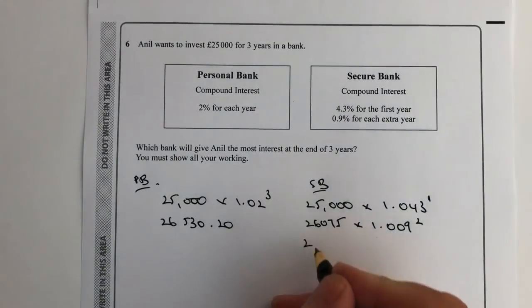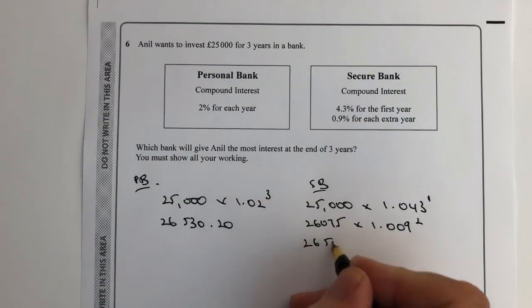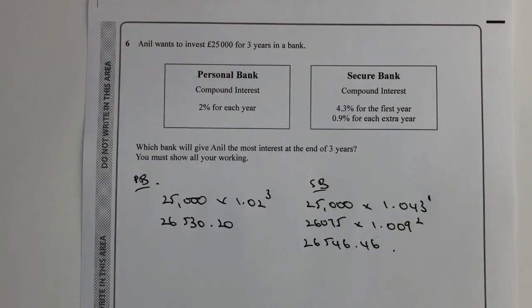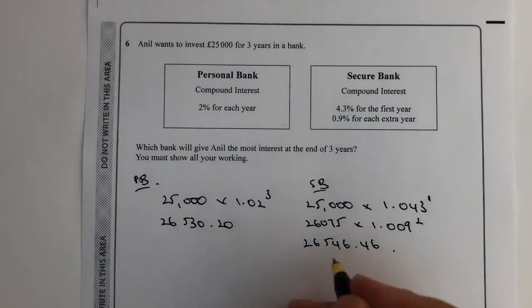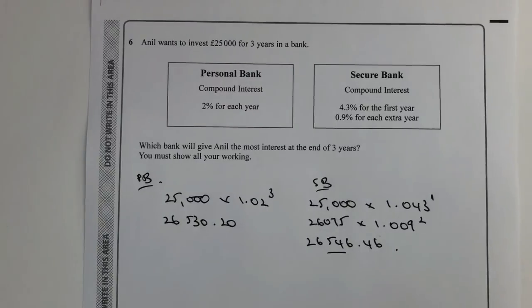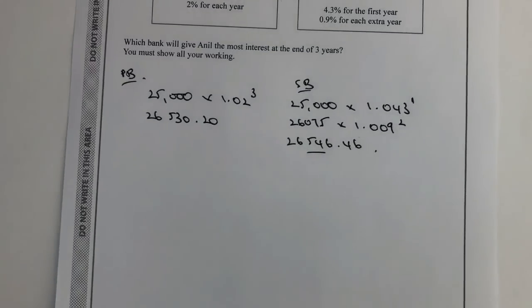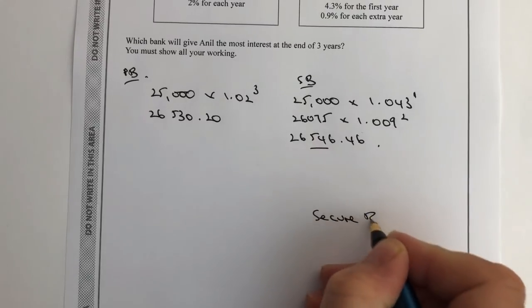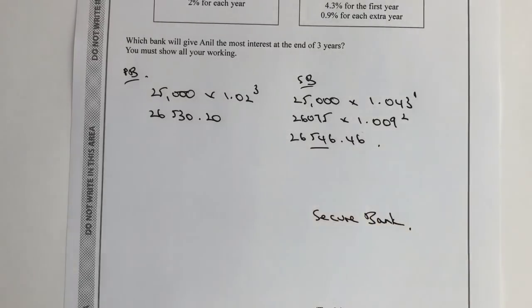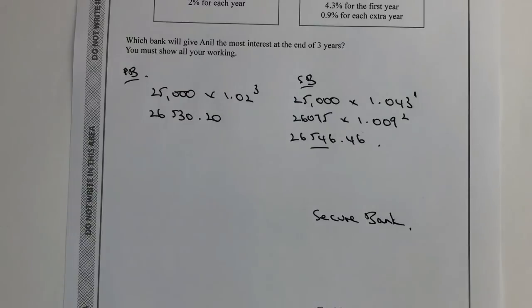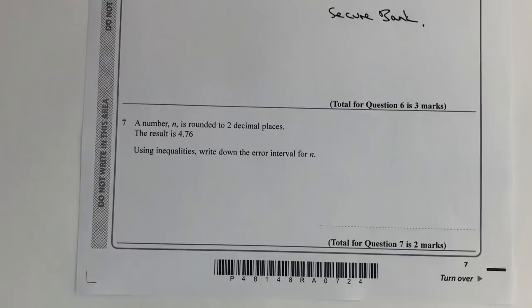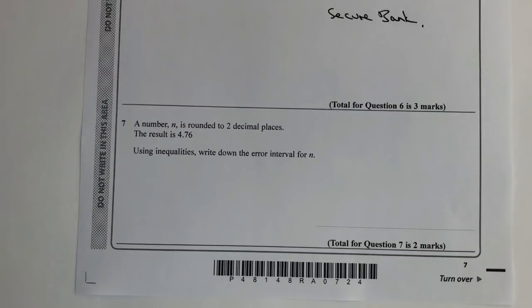At the end of those two years I'm going to get £26,546.46. So hopefully you can see that although it's not by much, Secure Bank will give just a slight extra bit of interest. So in this particular case, Secure Bank would be the slightly better way of investing the money.